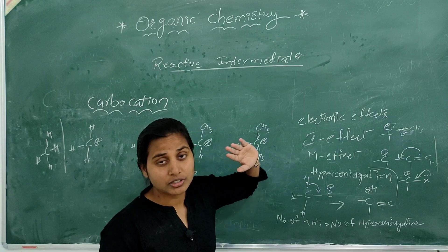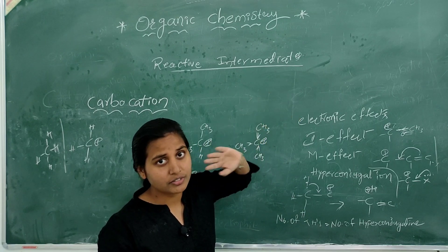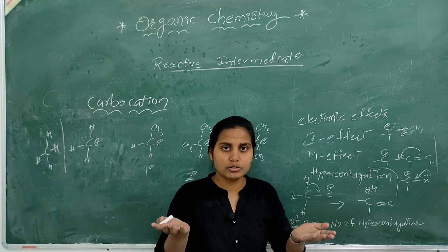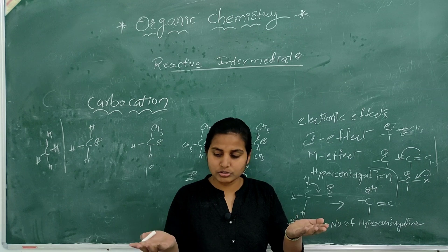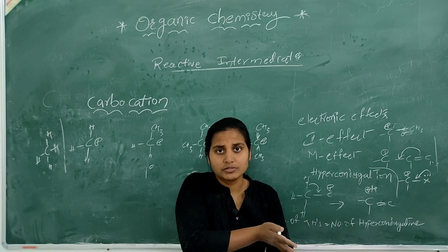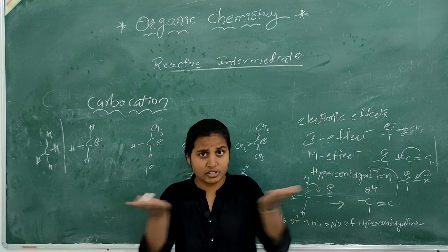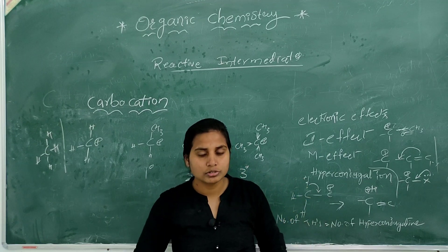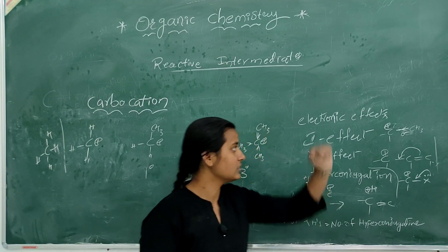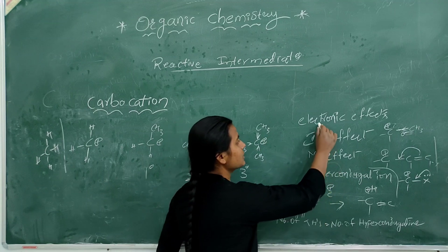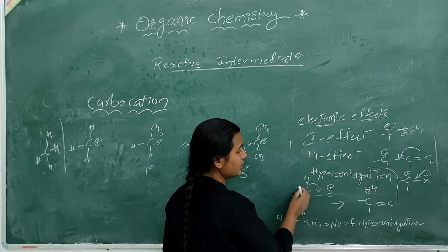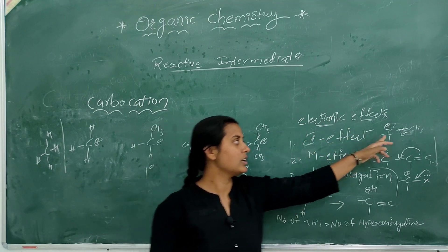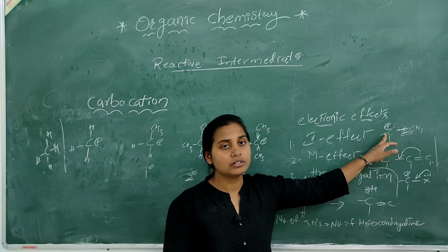What is the displacement of electrons? It is like water in a pipe — it will shift automatically to balance. If there is a carbocation where electrons are deficient, the electrons will shift automatically to stabilize it. There are three types of electron displacement effects: inductive effect, mesomeric effect, and hyperconjugation. The inductive effect is the displacement of sigma electrons towards the more electronegative atom.